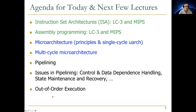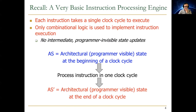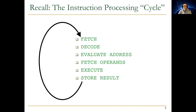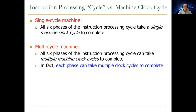Recall what we were doing: we're building a basic instruction processing engine — a single-cycle machine where each instruction takes a single clock cycle to execute. We use only combinational logic to implement instruction execution, and as a result there are no intermediate program-visible state updates. You take the architectural state, process the instruction one clock cycle, and produce architectural state prime, just as the von Neumann model dictates.